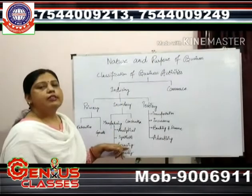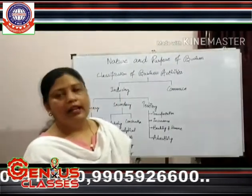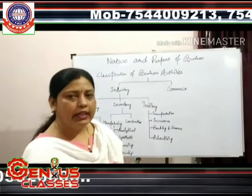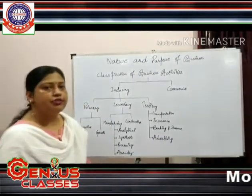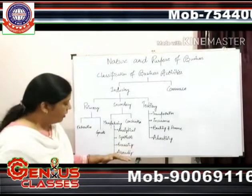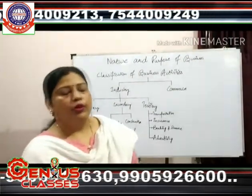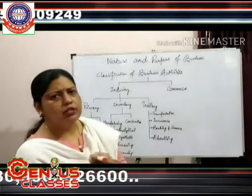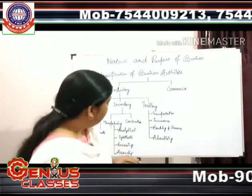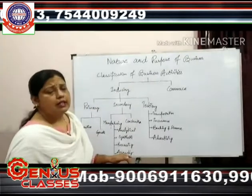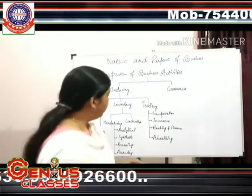Next is the processing industry, where goods go through different stages of processing. After processing raw materials through various stages, a new product is formed — for example, the sugar industry. Then comes assembly industry, where different parts or products are assembled to form a new product, such as TVs, automobiles, and mobile phones.